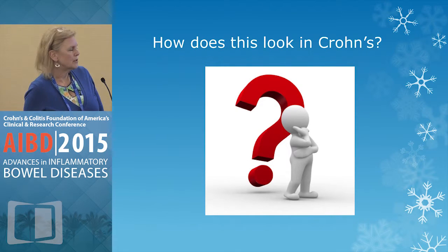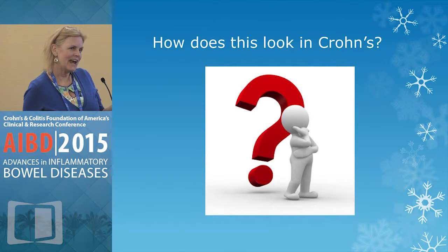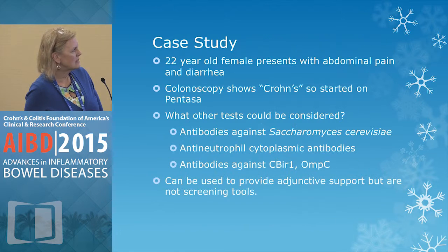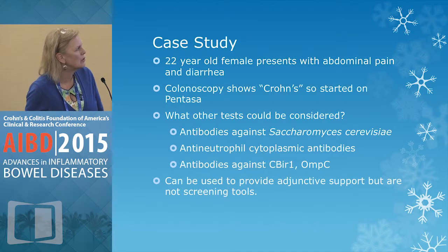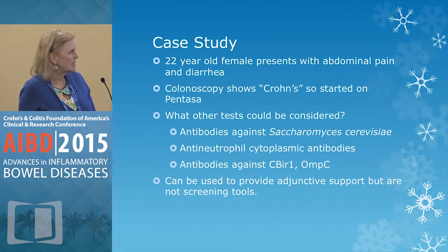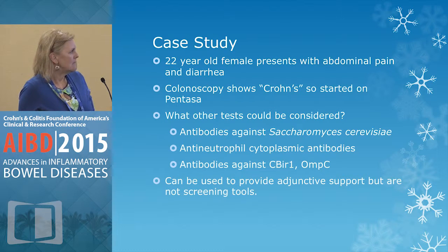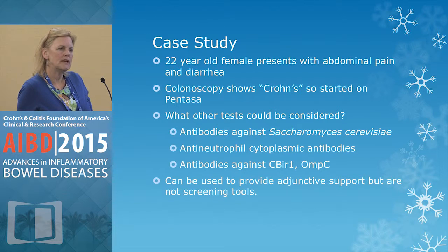So how does this look in Crohn's? I have a patient I've worked with for many years, so some clinical tools we have now weren't available back then. She's a 22-year-old female who presents elsewhere — not at our clinic — with abdominal pain and diarrhea. A colonoscopy showed Crohn's but it's unclear where it is — small bowel or colon. She was put on Pentasa. What else would we consider in terms of testing before implementing therapy in a patient like this?